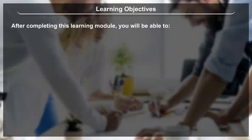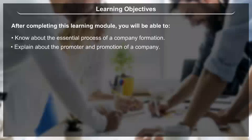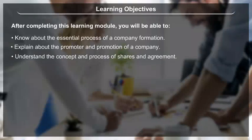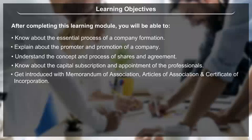Learning Objectives: After completing this learning module, you will be able to know about the essential process of company formation, explain about the promoter and promotion of a company, understand the concept and process of shares and agreement, know about capital subscription and appointment of professionals, and get introduced with Memorandum of Association, Articles of Association, and Certificate of Incorporation.